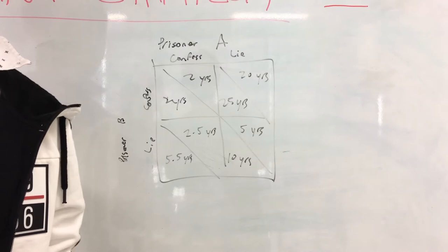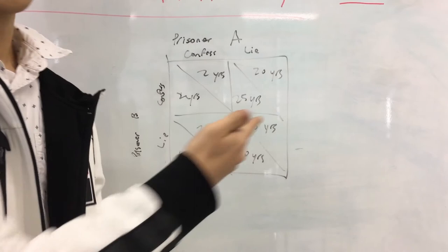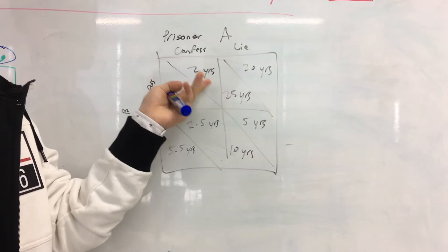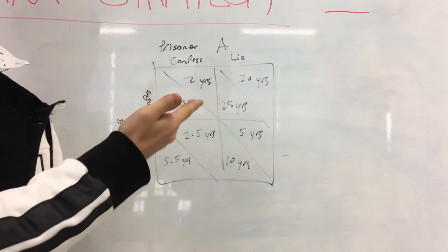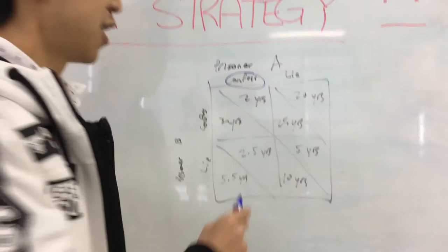Let's explore whether there is a dominant strategy, firstly for prisoner A. If prisoner B decides to confess, then prisoner A can either have two years or 20 years in prison. Obviously, prisoner A would want to minimize this, which is why it would go with confessing, or two years. However, if prisoner B decides to lie, then prisoner A can either have 2.5 or 5 years, and once again it will decide 2.5 years as it is a shorter sentence. Therefore, the dominant strategy for prisoner A is to confess.